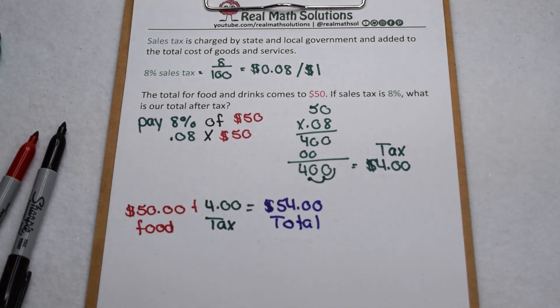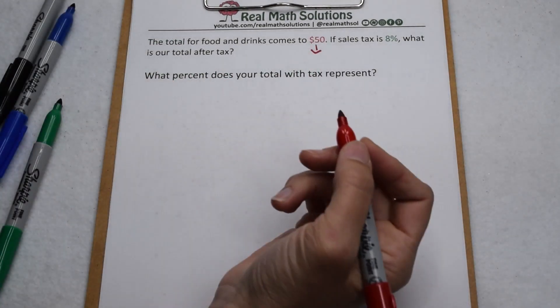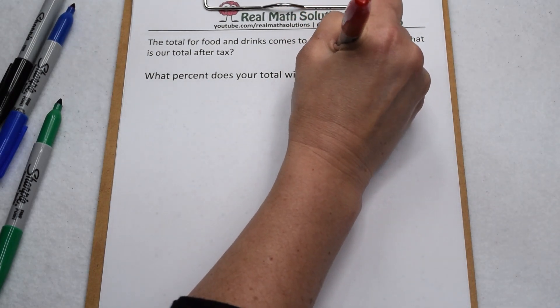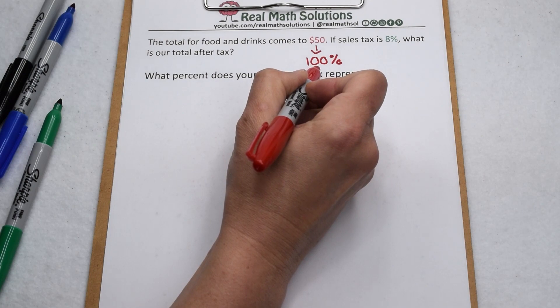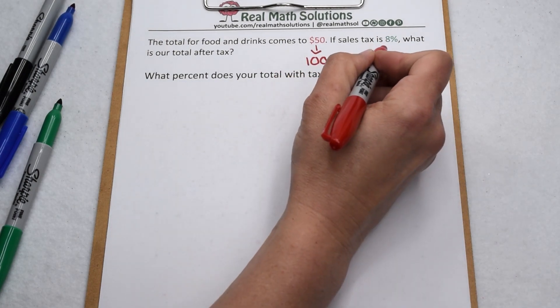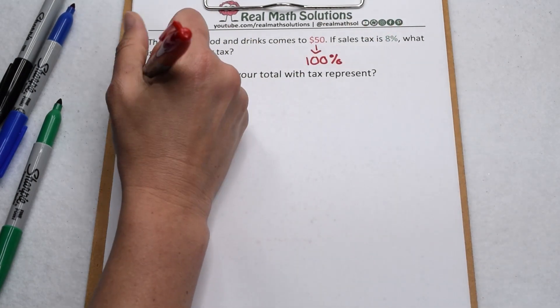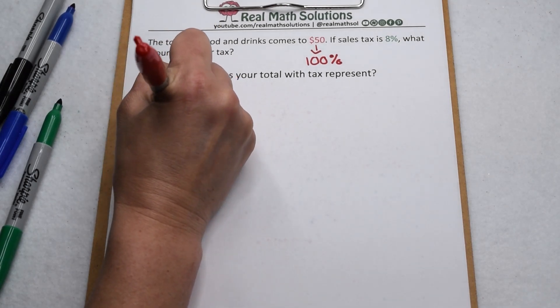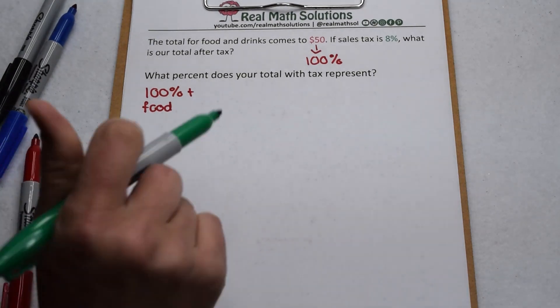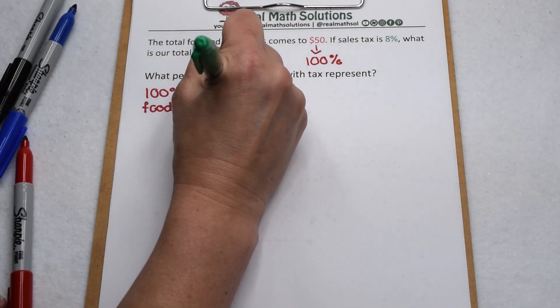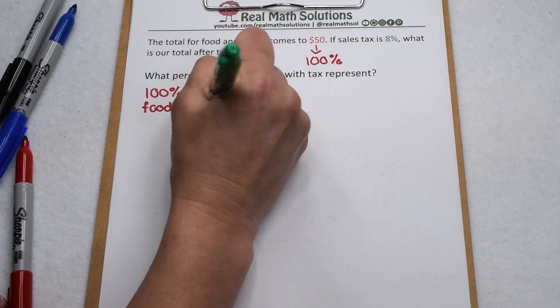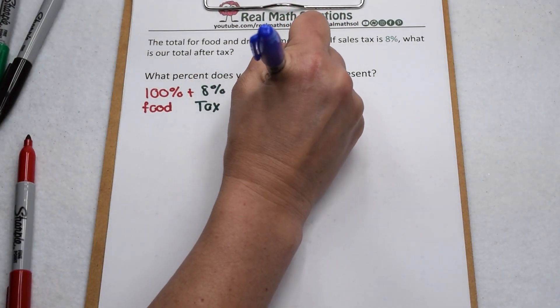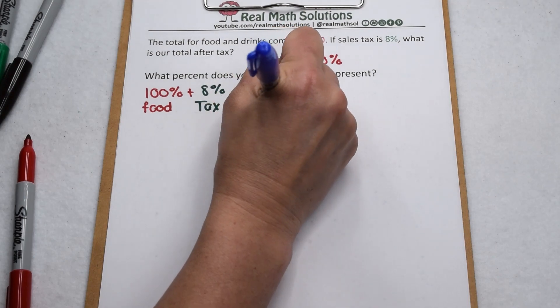Another way to find our total with tax is to think in terms of percents at the beginning. Start with our $50. $50 represents 100% of what we spent at that restaurant on food and drinks. Sales tax is another 8%. So that means altogether, in terms of percents, we're going to pay 100% of our bill to cover the food, plus an additional 8% of our bill to cover the tax. So that means altogether, we're going to pay for 108% of what we bought there.